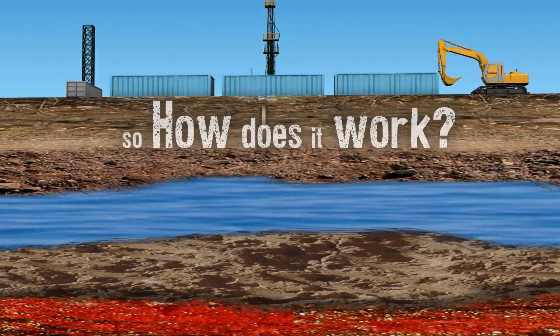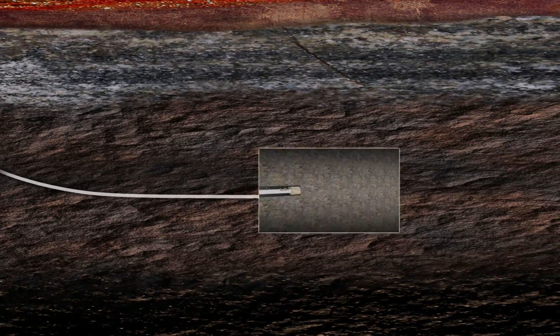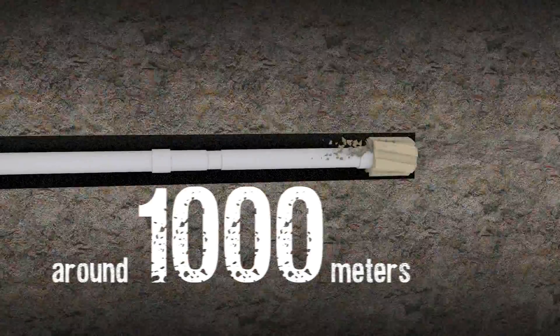First part of the operation involves drilling through the earth's surface and then turning horizontally for around a thousand meters.